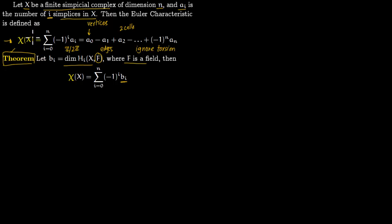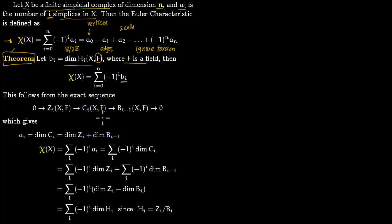Let us prove this theorem. This is a very important theorem that makes the Euler characteristic more applicable and allows you to carry it over to other contexts like number theory. The theorem follows from the chain complex: you apply the boundary map, and since we are working in homology, this goes to B_{i-1}. Here B stands for the boundary. You take the kernel of this map, which we denote by Z_i, meaning the cycles. This is the inclusion, and the kernel is the cycles.